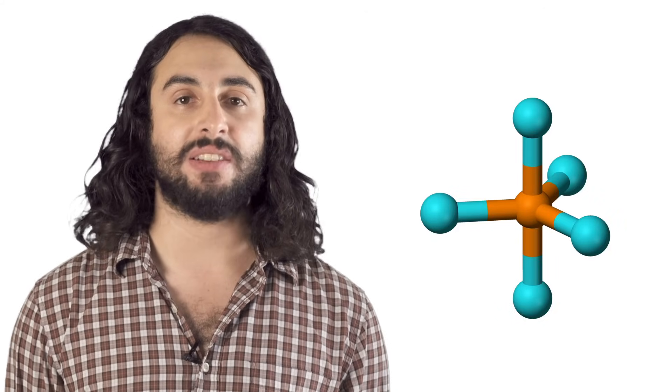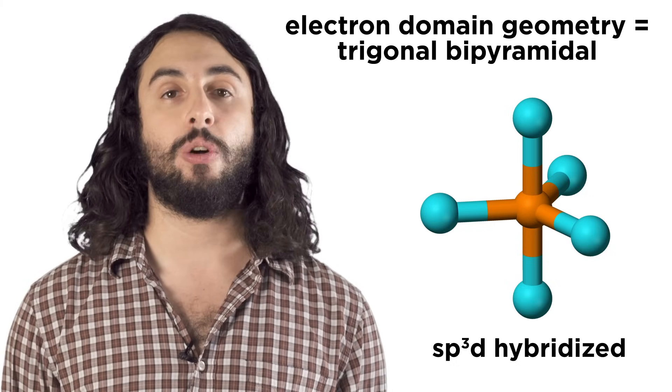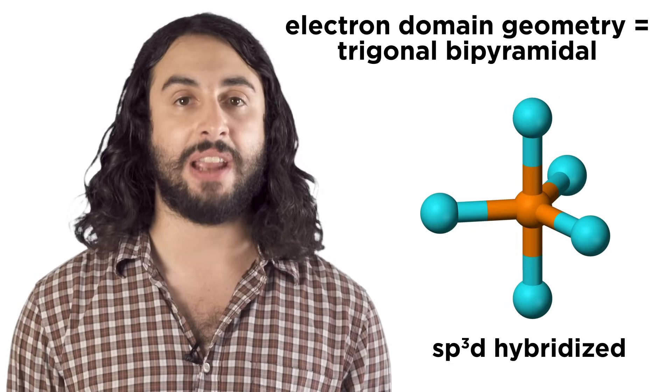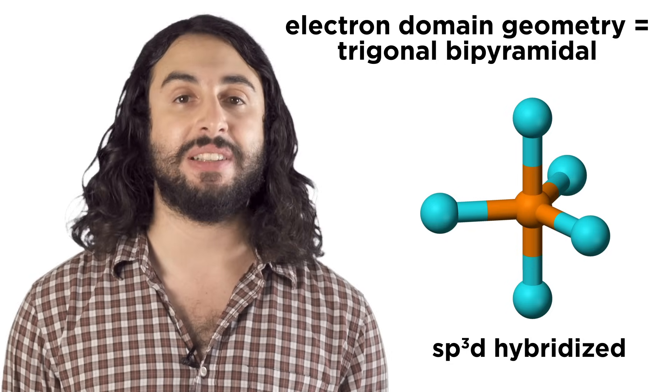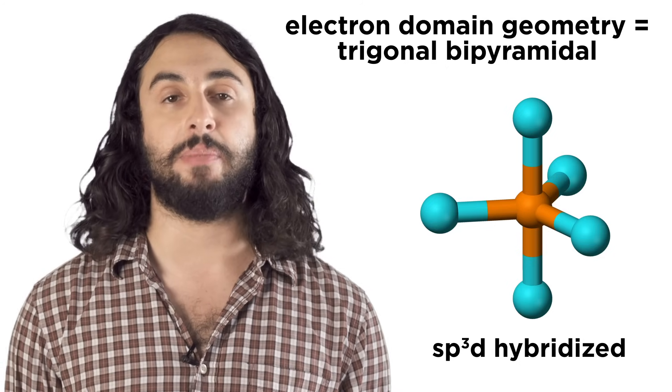Atoms with five electron domains are sp3d hybridized and have trigonal bipyramidal electron domain geometry, basically two pyramids connected at the base. These complexes have both 90 and 120 degree bond angles.